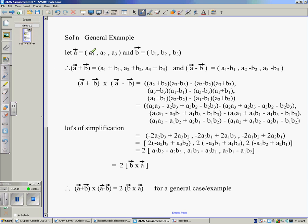Here we have to let A equal a vector A1, A2, A3, and B equal a vector B1, B2, B3.